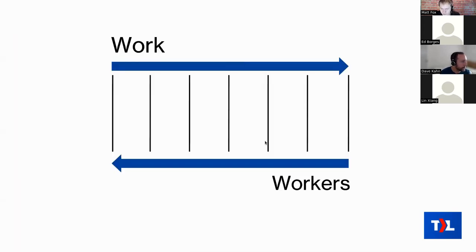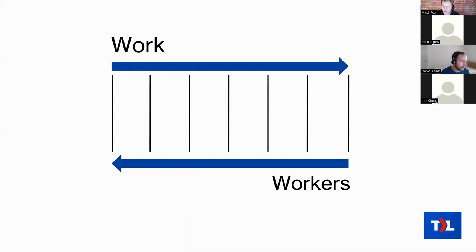One way to remember this: the work itself goes left to right on a Kanban board — from new toward complete on the right. The workers go the opposite way — they work from right to left. That's because we want to emphasize finishing work rather than starting new work. So we prefer to work on things closest to being completed, which we find on the right side of the board.